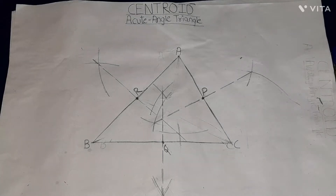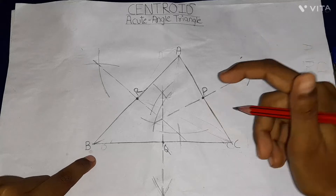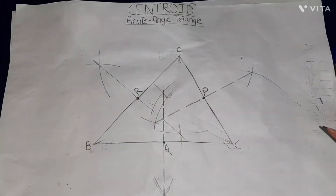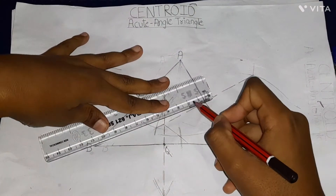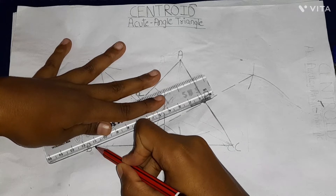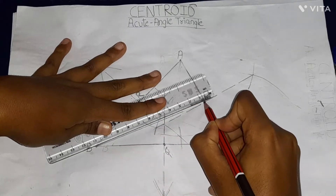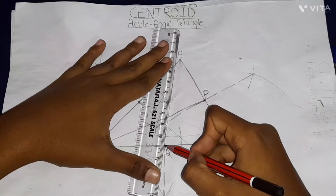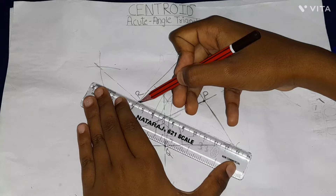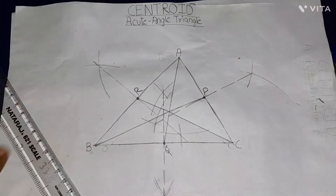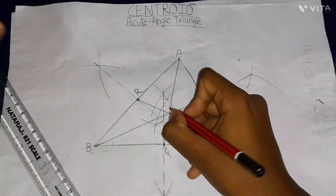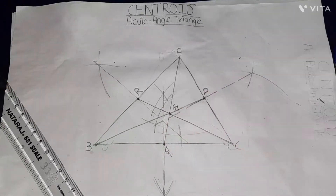As we have got all the midpoints, we will connect each midpoint to the opposite vertex: P to B, because its opposite vertex is B; Q to A; and R to C. These are the medians of the triangle. The point where all these medians — BP, AQ, and RC — meet is called the centroid, which is denoted as G.